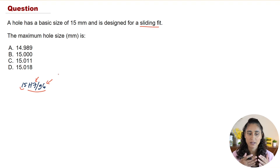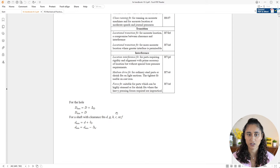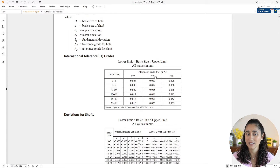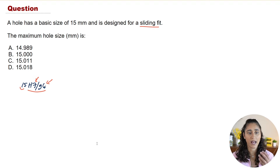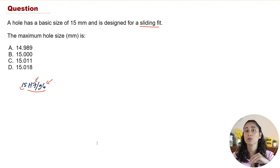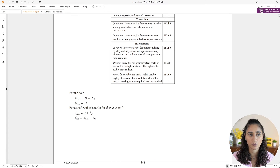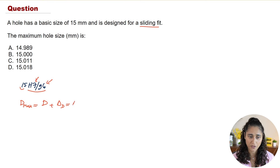Next we go to the tolerance table in the reference handbook. We have IT7 and a basic size of 15, which falls between 10 and 18, so the tolerance grade is 0.018. The maximum hole size equals the basic size plus the tolerance — this equation is given in the reference handbook.